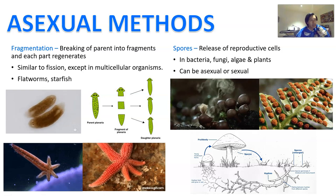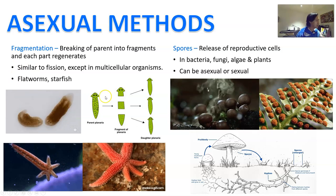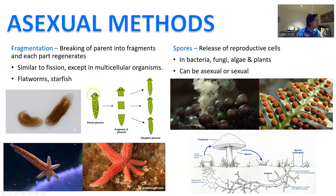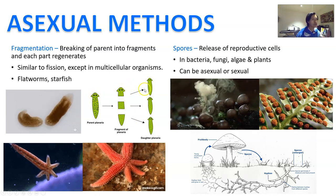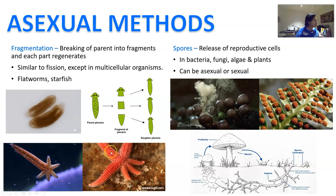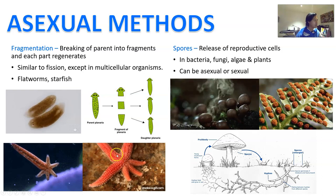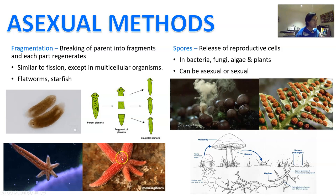Fragmentation is when the parent breaks into tiny fragments and then each fragment slowly regenerates into a new individual. It's similar to fission, but mainly happens in multicellular organisms. For example, this is a flatworm — if you cut a flatworm into three pieces, each of those pieces, whether it has the head, middle, or tail, is going to regrow into a new individual provided it has the right resources. Another good example is a starfish — here is a starfish with one of its original arms and five new little baby arms. So long as a part of the central disc is in place, you can break a starfish in any which way and it's going to regrow those particular parts.